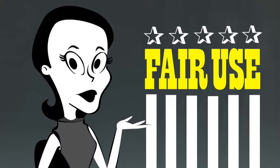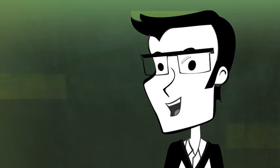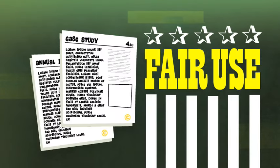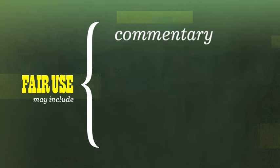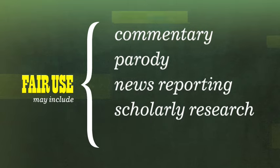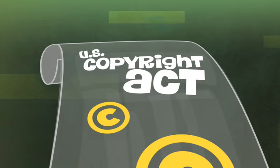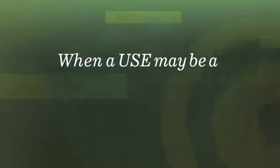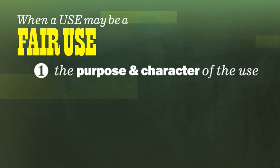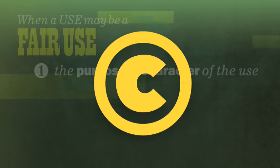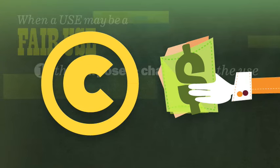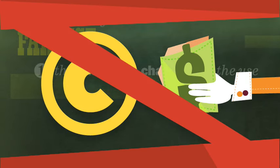But what about fair use? If it's for our research, doesn't fair use mean I can use the material? Maybe. Fair use recognizes that certain uses of copyright-protected work do not require permission from the copyright holder. Fair use allows for the use of copyright-protected work for commentary, parody, news reporting, research, and education. The U.S. Copyright Act lists four factors to help determine when a use may be considered fair use. The first is the purpose and character of the use — if the use is intended to help derive financial or other business benefit, then it is less likely to be considered fair use. That usually ends the analysis for most business uses.